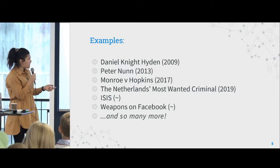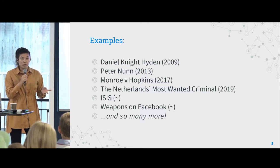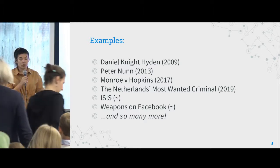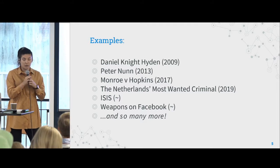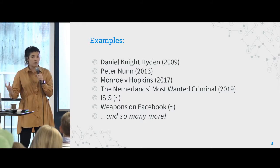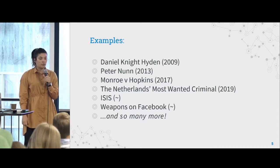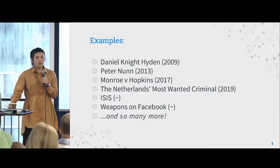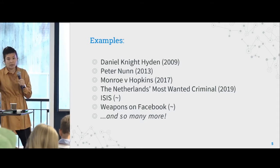And then you have the case of the Netherlands' most wanted criminal. This individual was a suspect for murder, so he fled the Netherlands and went to his home country somewhere in the Middle East. When he realized he was being smarter than the police, he started posting pictures of himself on social media and taunting the police — outside his house, on the beach, at a famous mall. So the police asked people to help identify his location, and they figured out where he was staying. He went back to the Netherlands to face charges.